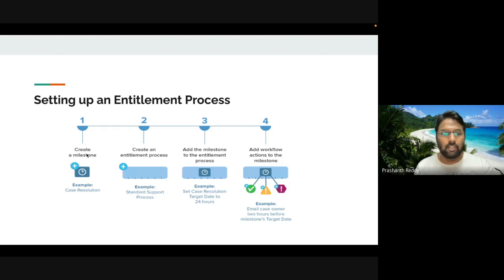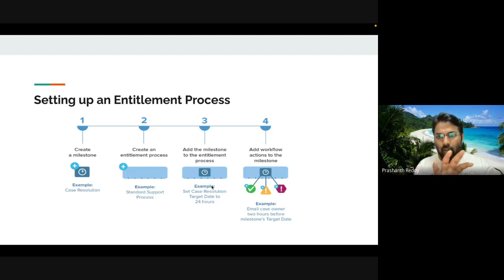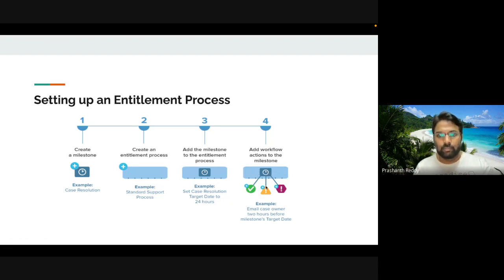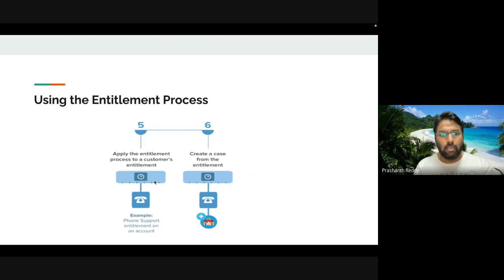Milestones are not cases — they are separately defined time periods. You define a time period, add it to an entitlement process, and that tells you the standard model in which a particular account is being operated. When you add milestones to the entitlement process, you can see the time frames defined — a four-hour window, a two-day window — and based on those, rules are defined: success, warning, or breached.